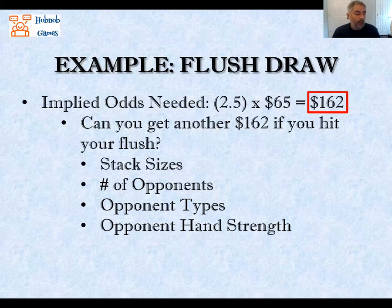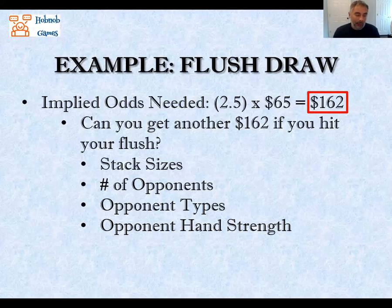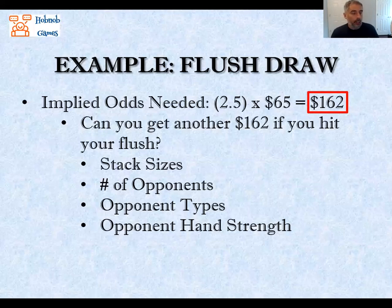The final factor to consider is opponent hand strength. Even a conservative player with a very strong hand — like a flopped set or pocket aces with top pair — simply cannot bring themselves to fold, and will call even when the flush gets there. So you might have the correct implied odds to move forward. These are all questions you need to honestly ask yourself. If the answers are yes, this is a scenario where even without correct direct odds, you might have the correct implied odds to make up the difference on future streets.